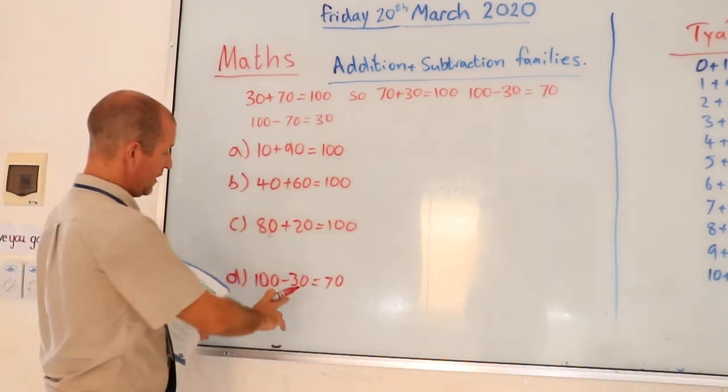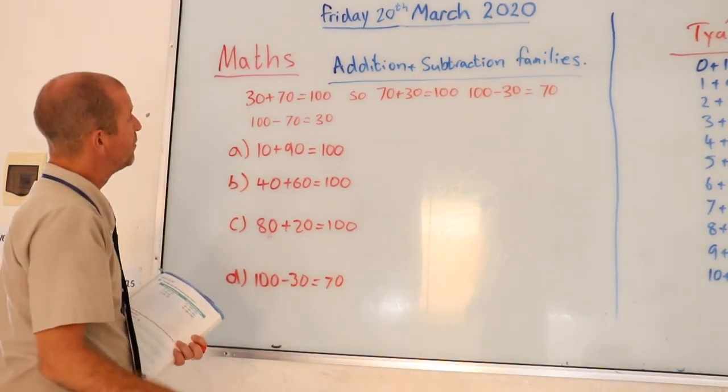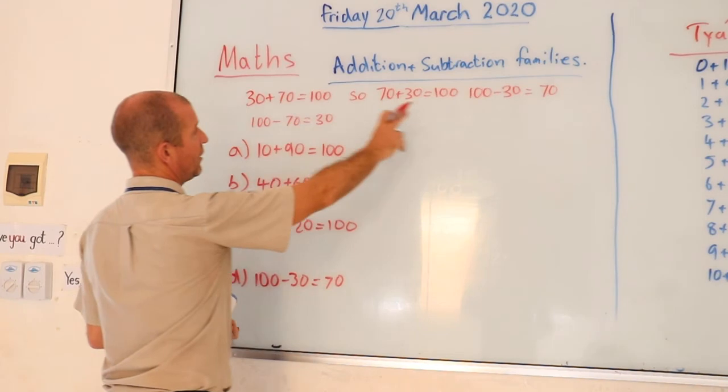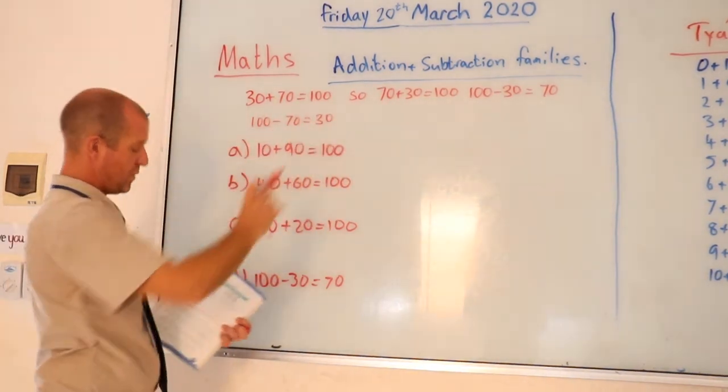Now don't get confused that this is a subtraction, a minus number, because you can just work it out from what we did earlier, okay? You can work out which missing ones we have.